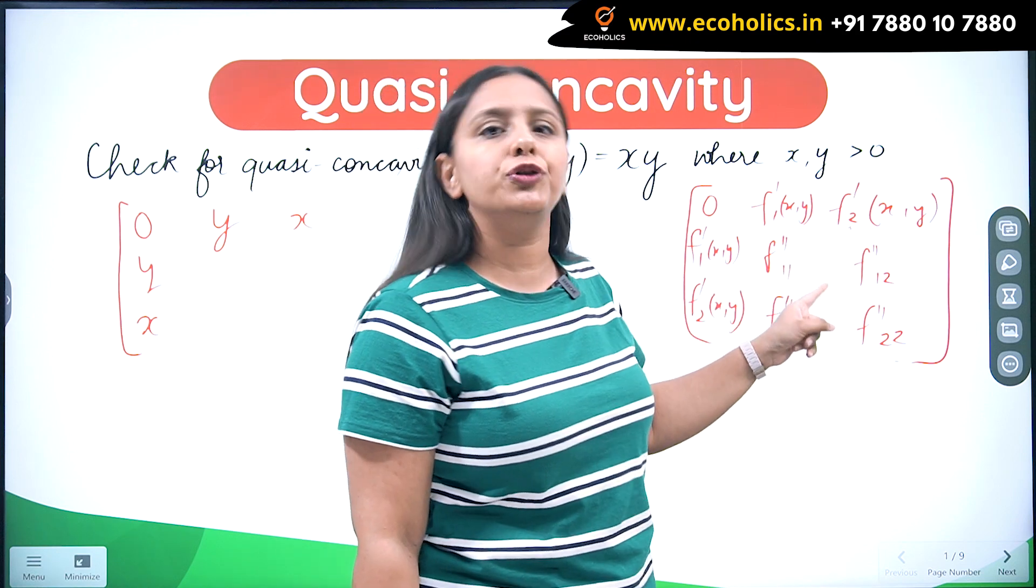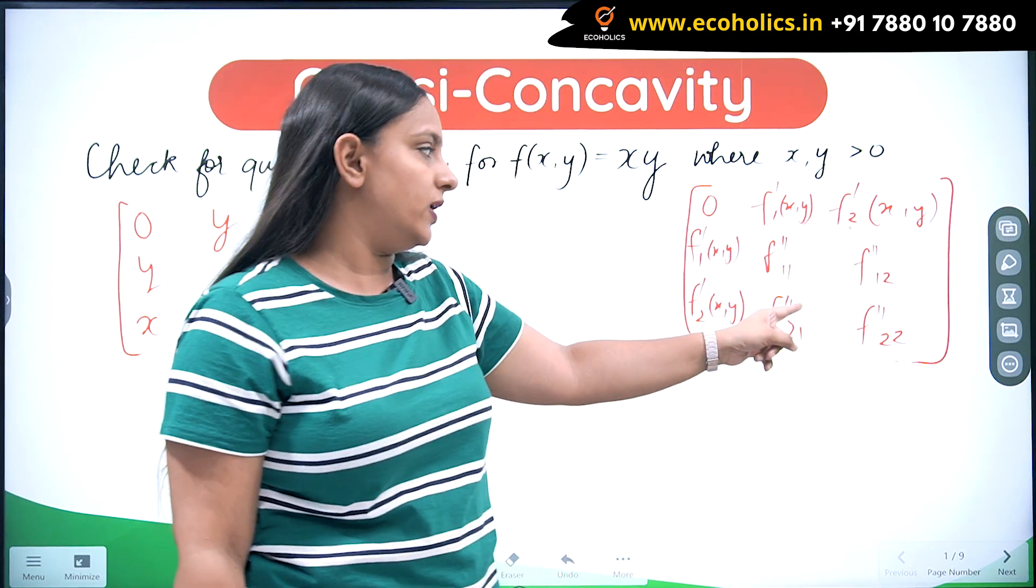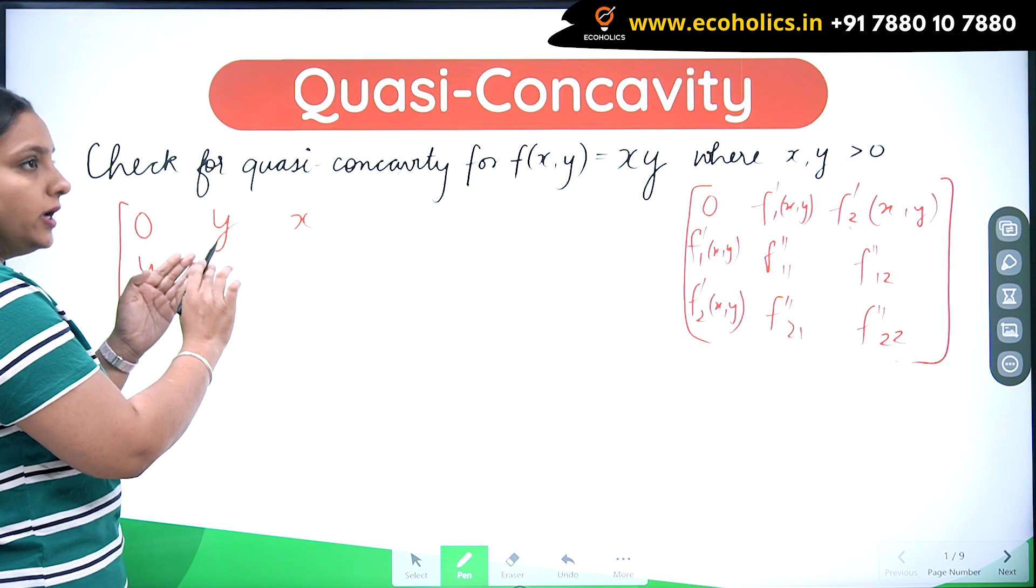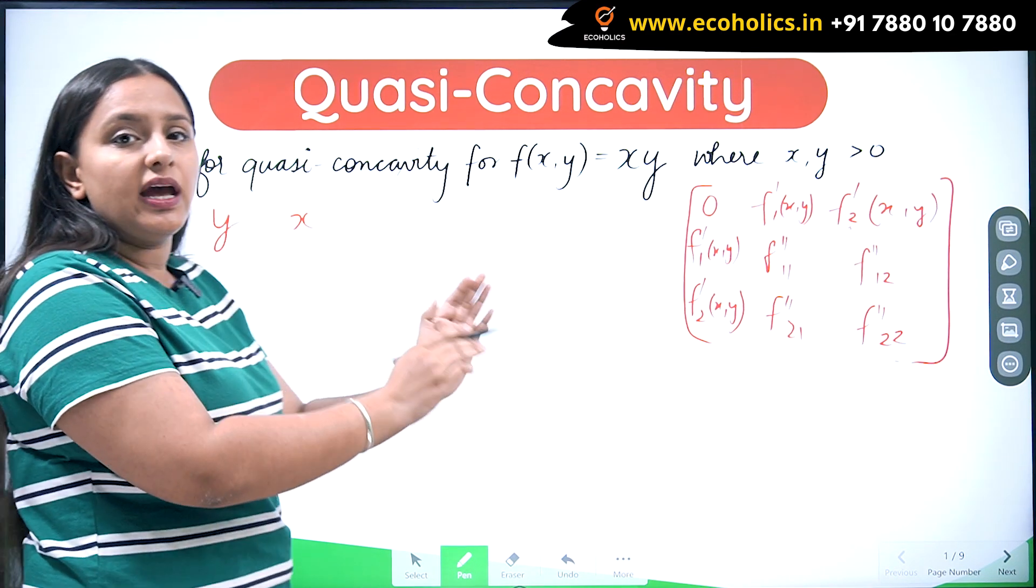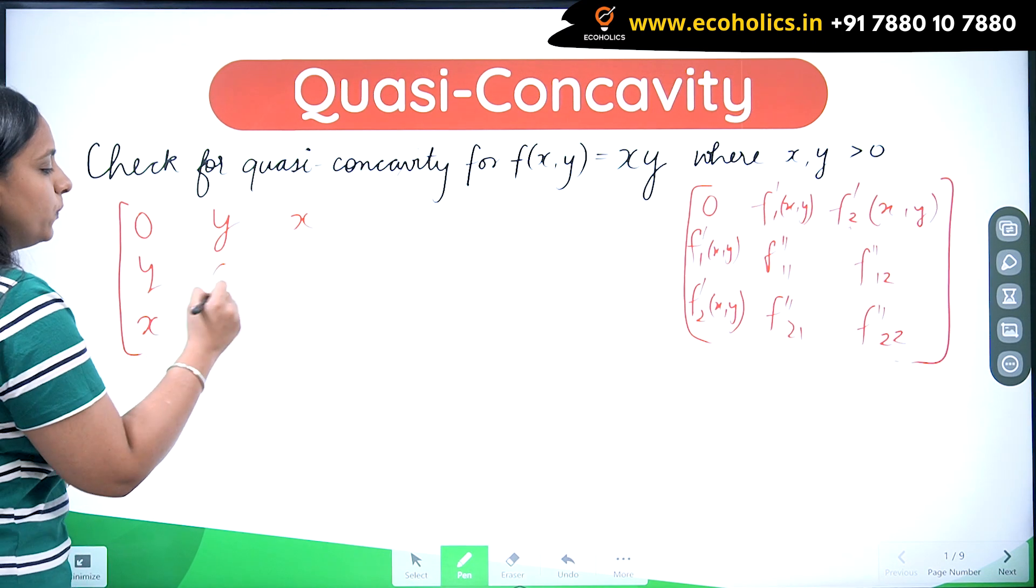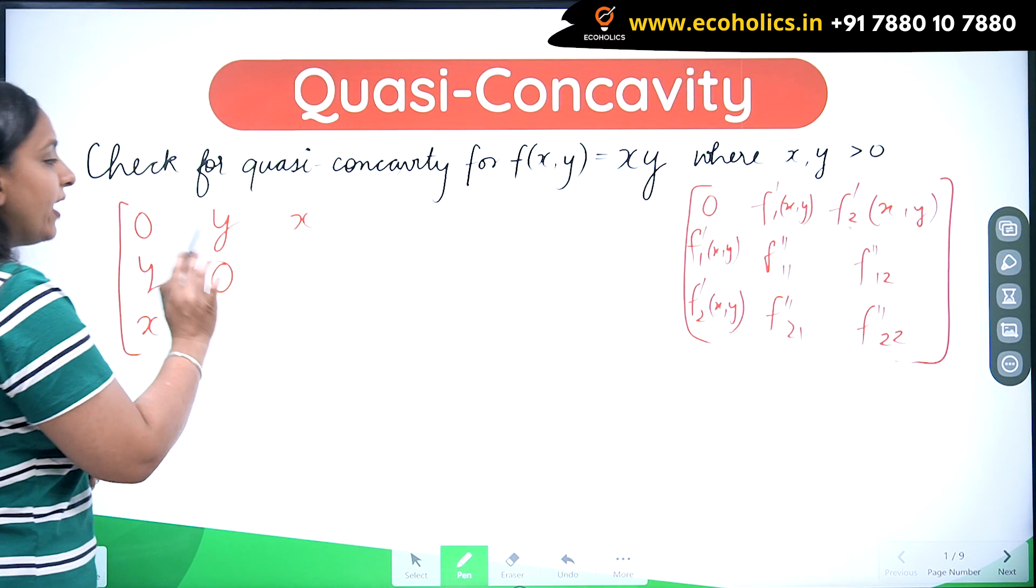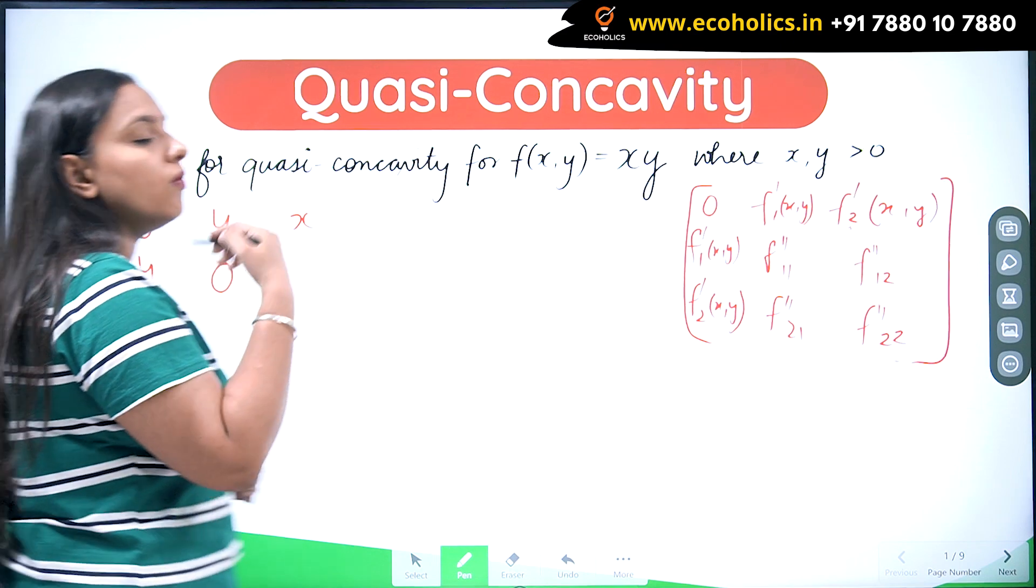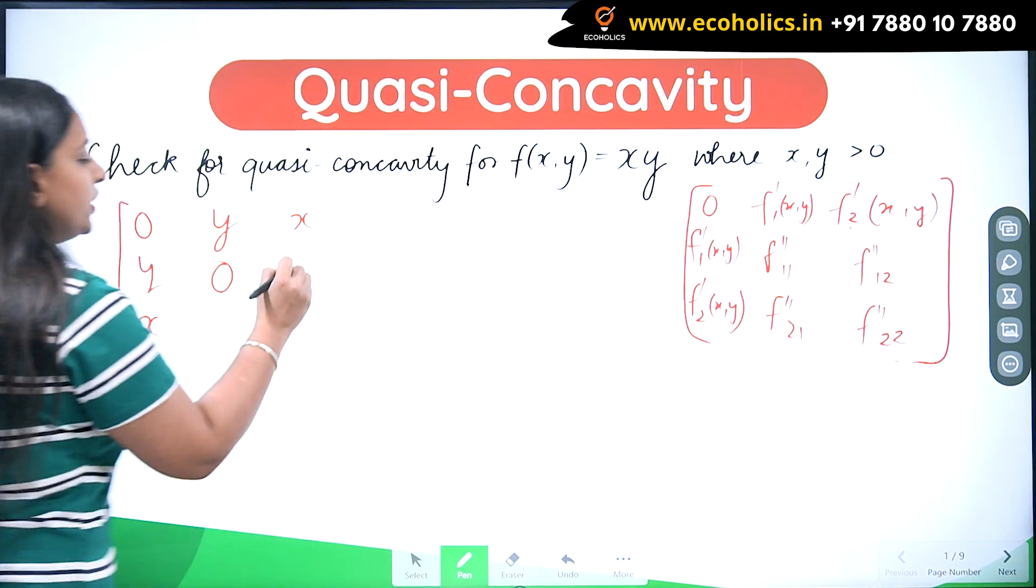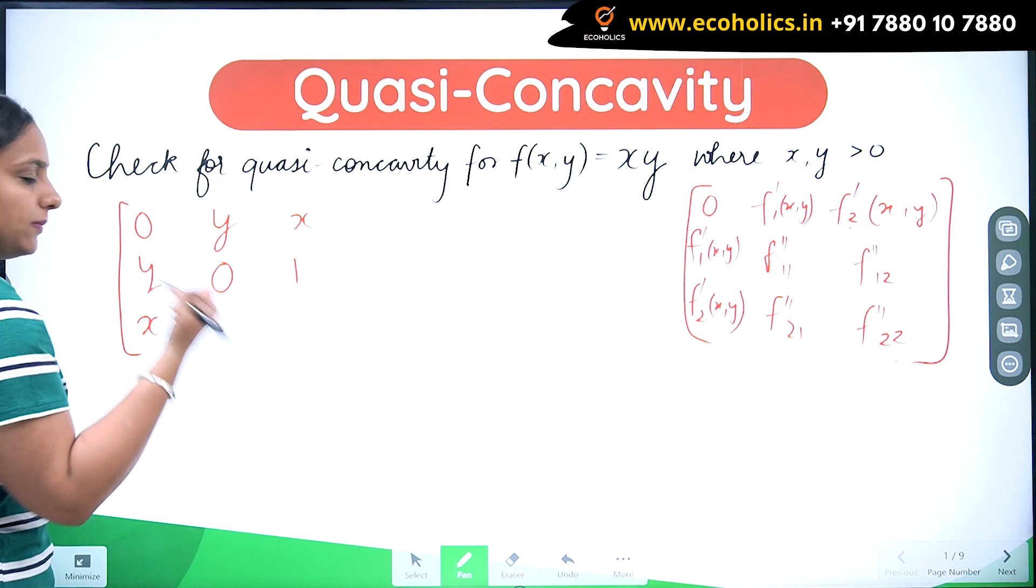So f dash 1 is y. If I try to derivate it again with respect to x, since I don't have any x related variable, it would become 0. So now I have to derivate this with respect to the second variable because I have to find f double dash 12. It would be 1. On the same note, I'm going to have 1 here and I'm going to have 0 here.